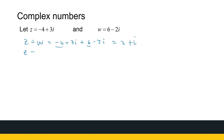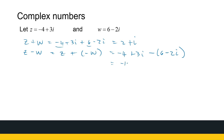Similarly, Z minus W means adding minus W to Z. In practice: minus 4 plus 3i minus (6 minus 2i), which gives minus 4 minus 6 equals minus 10 for the real part, and 3i plus 2i equals 5i for the imaginary part. So Z minus W equals minus 10 plus 5i.